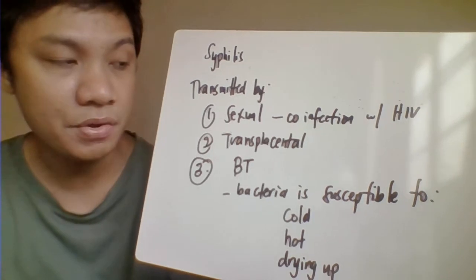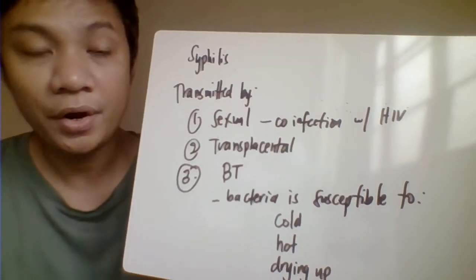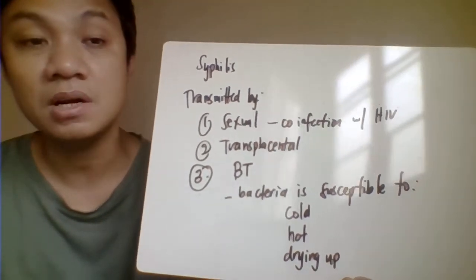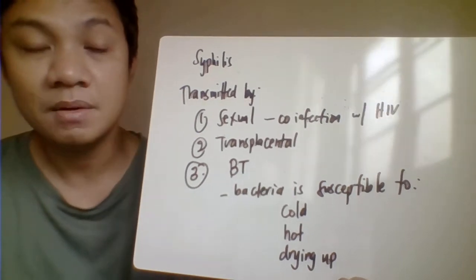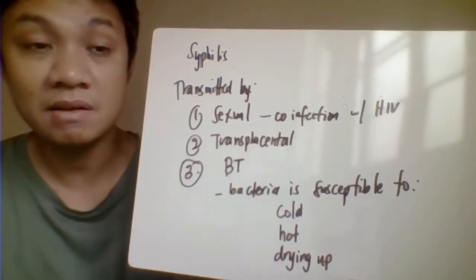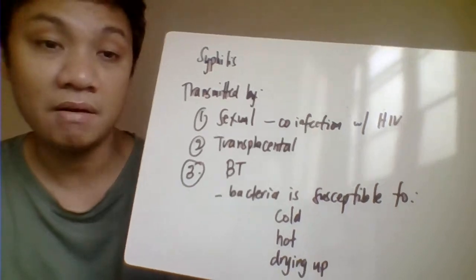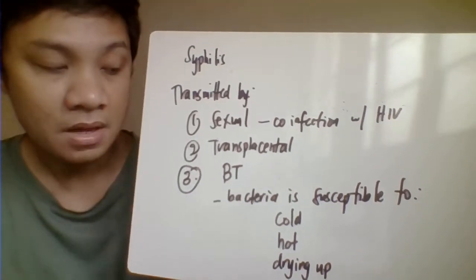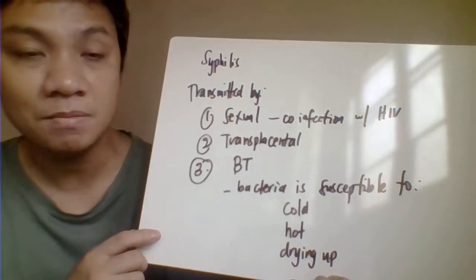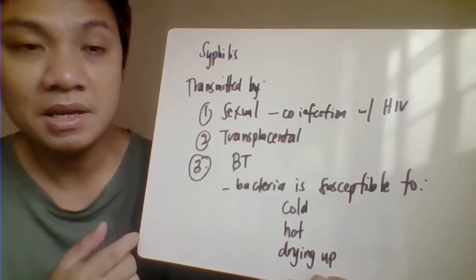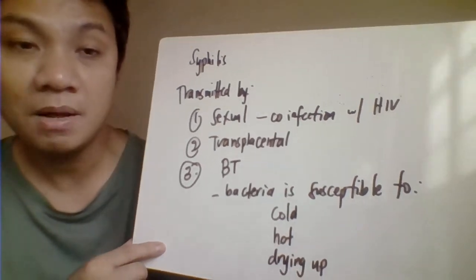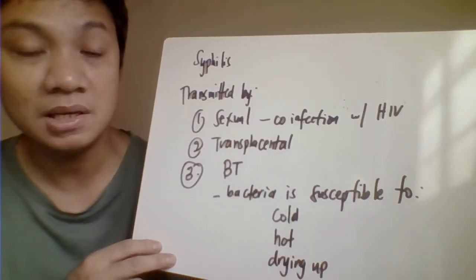The second mode of transmission is transplacental or congenital infection — if the mother is pregnant and infected with syphilis, the baby could also acquire the infection. Third, syphilis can also be transmitted by blood transfusion.